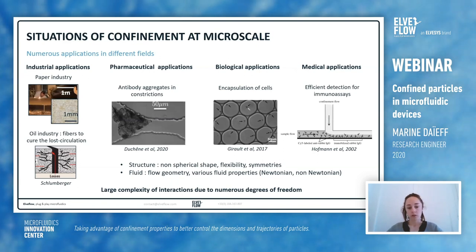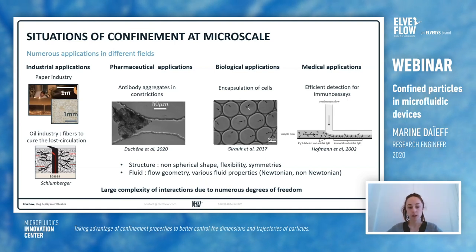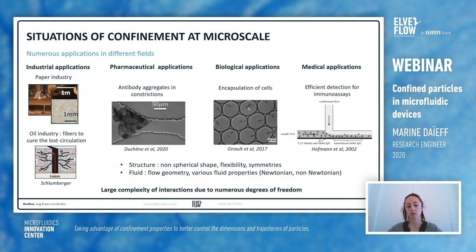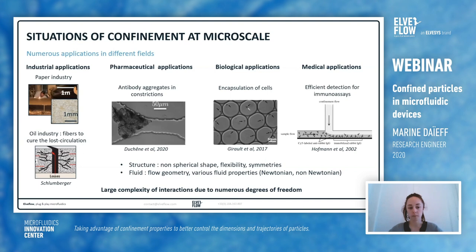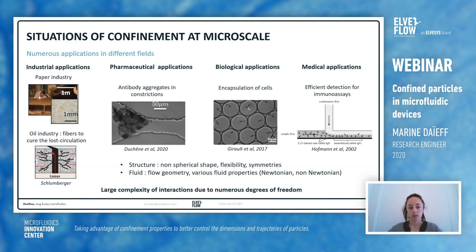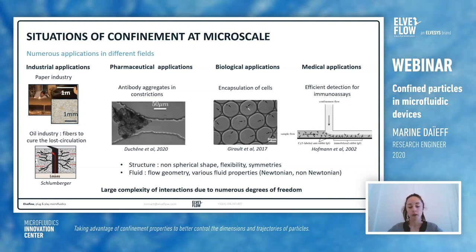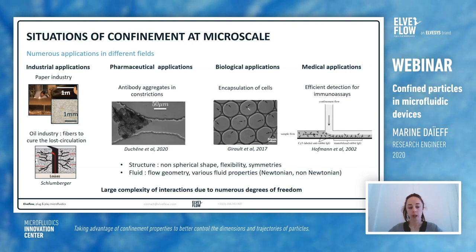In all these examples, you have different structures — for example, non-spherical shapes, flexibility, symmetries. You also have different fluids with different flow geometries, and various fluid properties such as Newtonian or non-Newtonian. There is then large complexity of interactions due to numerous degrees of freedom. In this webinar, we're going to talk about one specific application: the sorting of particles.